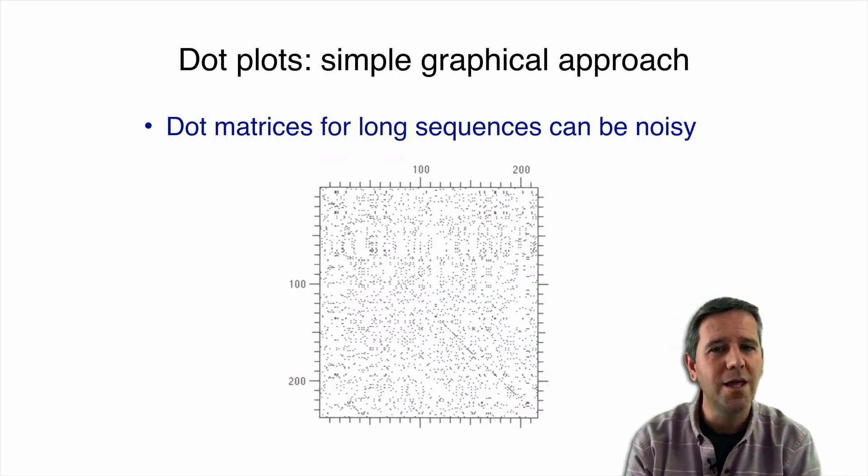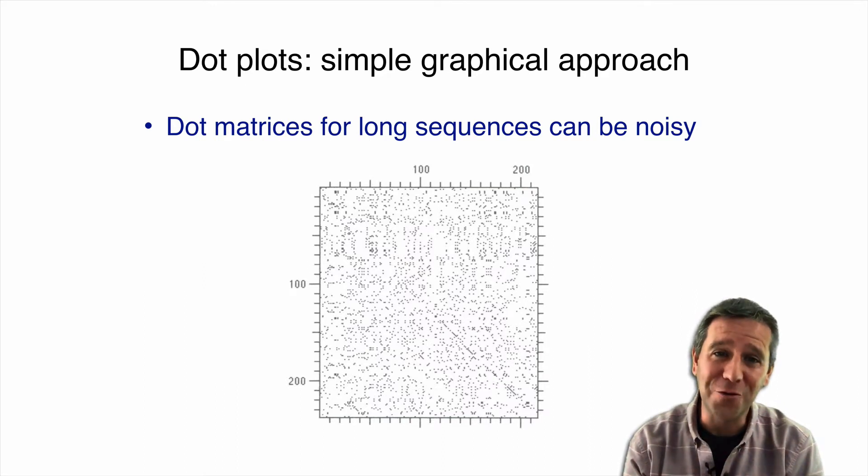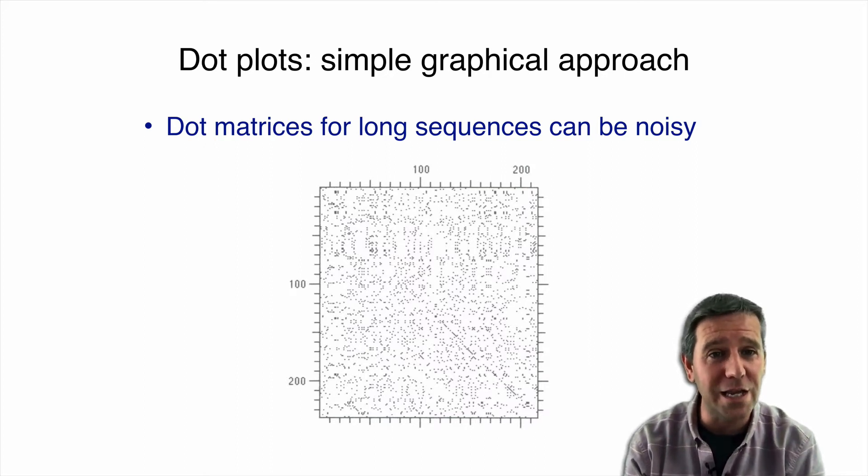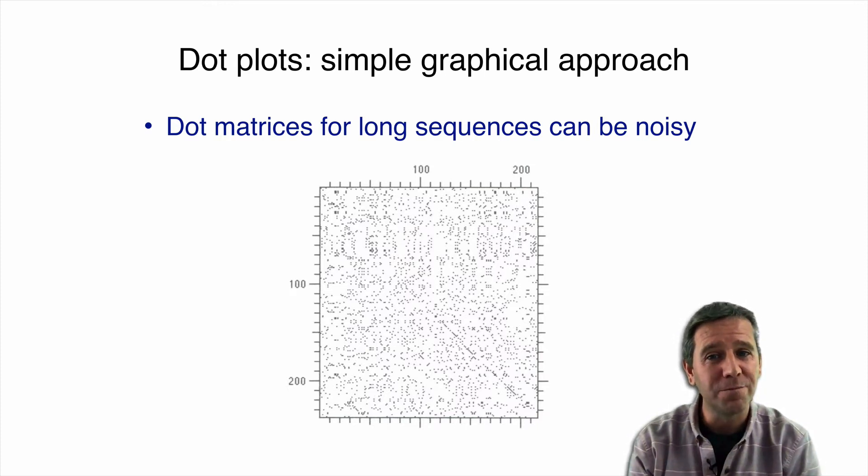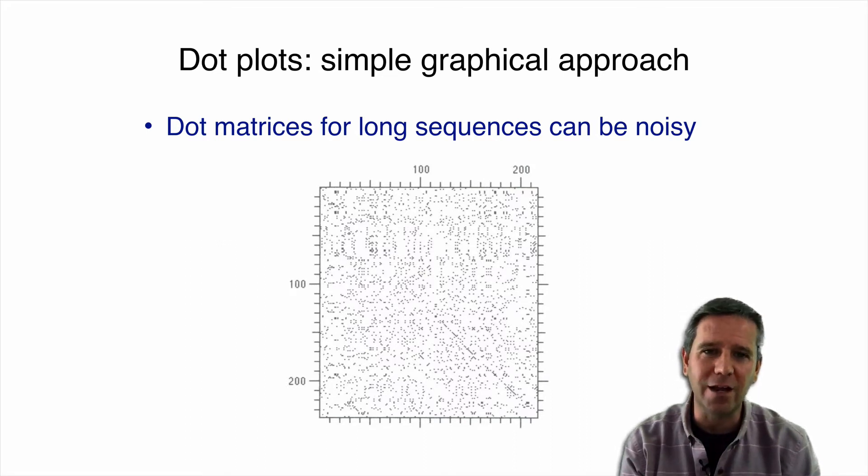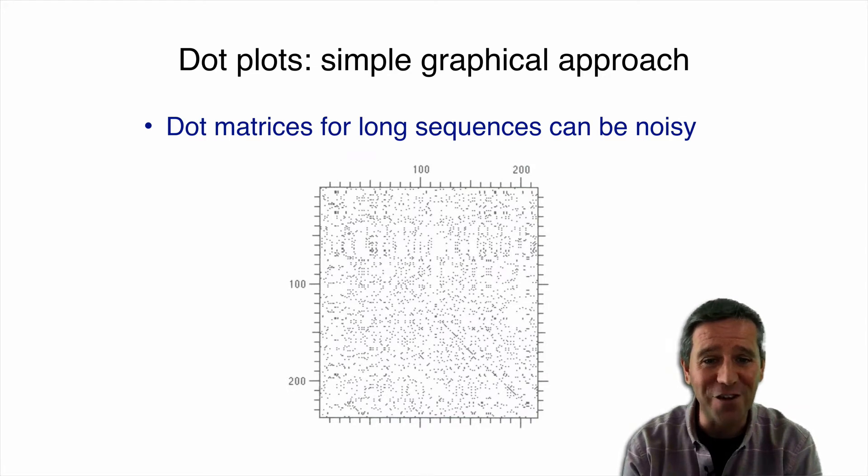So now in practice, these dot matrices or dot plots for long realistic sequences can be noisy, to the point we're looking at something like this. It looks a bit like someone sneezed on my computer screen here. That's not a nice thought in the current climate, of course. So what can we do to try and reduce this noise, all these dots that are all over the place in this plot, and not really representing these runs of consecutive sequential matches that we're often looking for? How can we pull out that kind of signal from all the noise of this sneeze-like view that we have here?